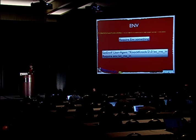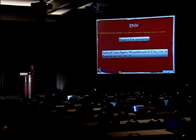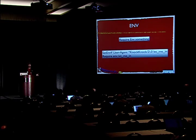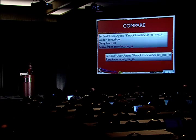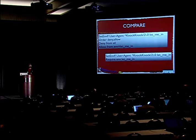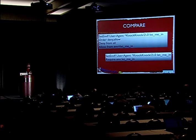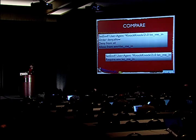Next we have environment variable requirements: 'require env something.' Here's a comparable example to the earlier one. I'm going to use SetEnvIf to set an environment variable called 'let_me_in.' If you don't specify a value it sets it to true or to one. Then I say 'require env let_me_in.' This reduces the four-line example from before to a two-line example. But it's not merely about lines of configuration — it's also about clarity. The 'order deny allow' and 'deny from all' gets in the way of understanding. We're simply saying require this environment variable; everything else is denied.